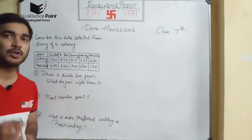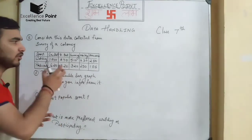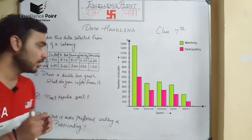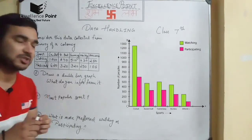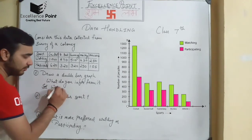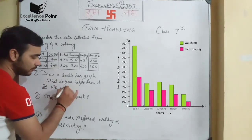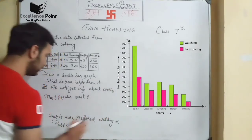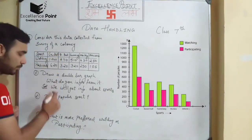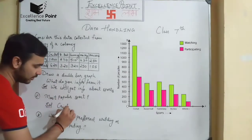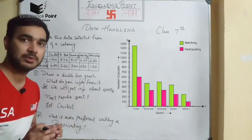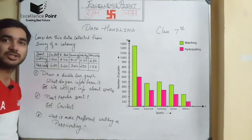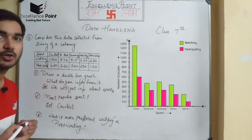In question number 5, there is data about sports and we have to draw a double bar graph. When you draw it, it will look like this. What do we infer from it? We get information about sports. The most popular sport is cricket. The most preferred activity — watching or participating — is watching. The question is finished.